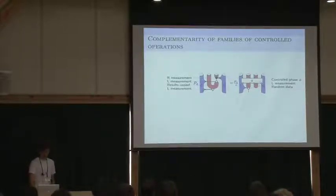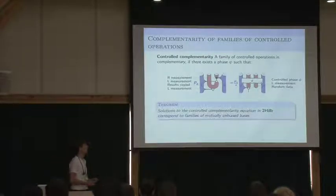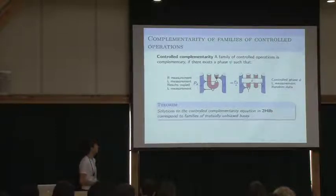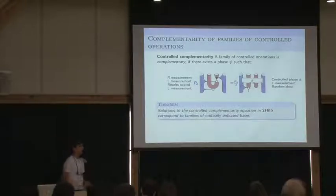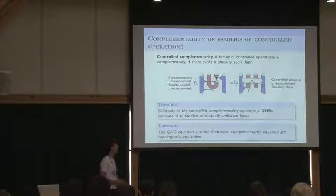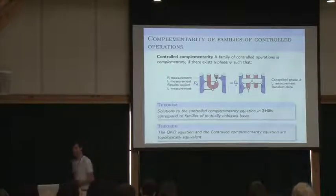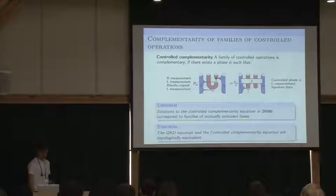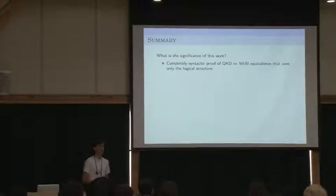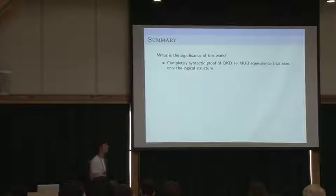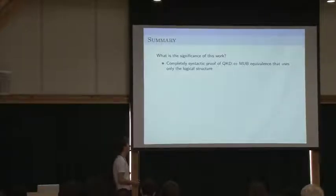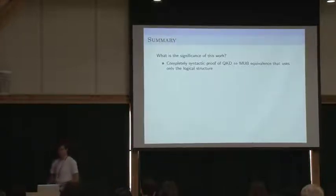This is the really abstract definition for a family of control operations to be complementary. But why actually is this significant? What can also be shown is that this complementarity equation is topologically equivalent to the QKD equation that I presented on the previous slide, and that will be achieved through a series of topology preserving two cell operations. The most important thing is that this is a completely syntactic proof of the equivalence between quantum key distribution and usage of mutually unbiased bases. At any point we don't really make any reference to the underlying Hilbert space structure. We only use the logical abstract syntax that we introduced.